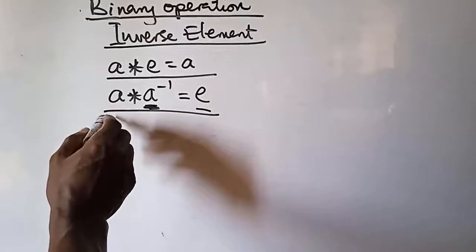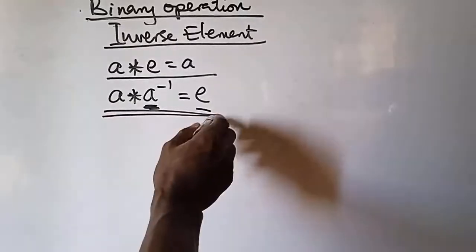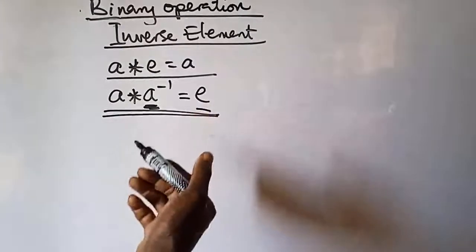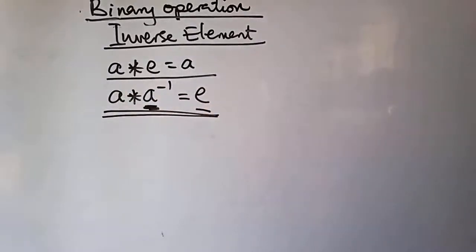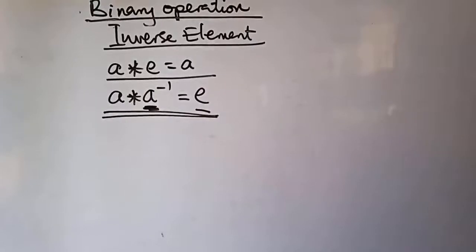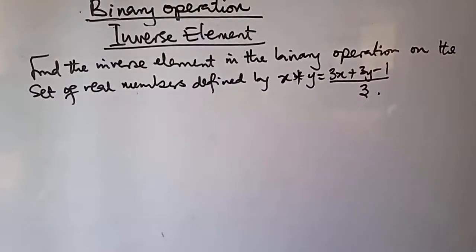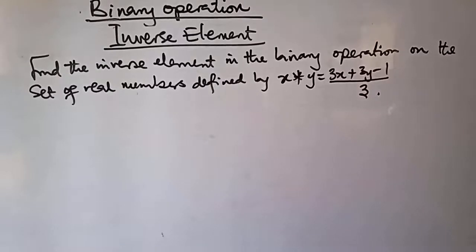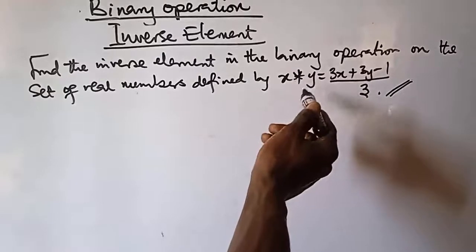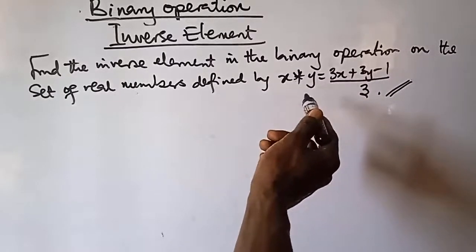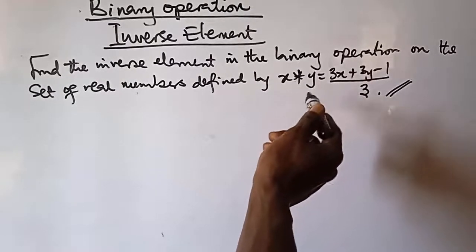Now let us get started with examples that will aid your understanding of these two rules. Let us work out this example, which says: find the inverse element in the binary operation on the set of numbers defined by this. I believe we've solved this in our previous video using the identity element.